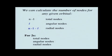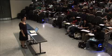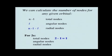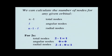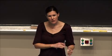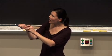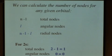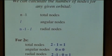For a 2s orbital, total nodes = 2 minus 1 = 1. Angular nodes: l equals 0, so zero angular nodes. Radial nodes: 2 minus 1 minus 0 = 1 radial node. What you find with s orbitals — and this is general for all s orbitals — is that all of your nodes end up being radial nodes. That has to be the case because l equals 0 for s orbitals.